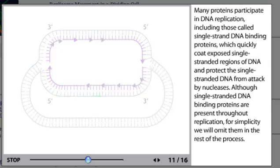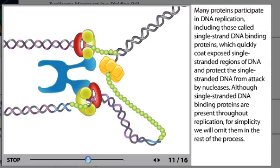Many proteins participate in DNA replication, including those called single-strand DNA binding proteins, which quickly coat exposed single-stranded regions of DNA and protect the single-stranded DNA from attack by nucleases. Although single-strand DNA binding proteins are present throughout replication, for simplicity, we will omit them in the rest of the process.